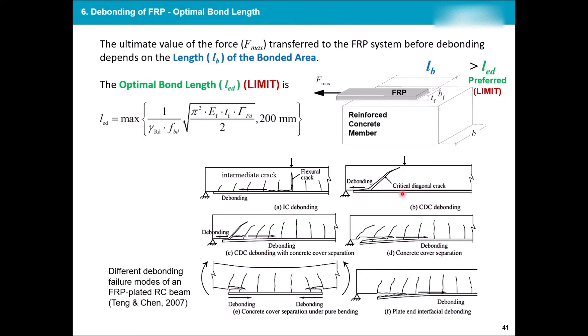This case, I will have the critical diagonal crack. Yes, so CDC with concrete cover separation as well. The concrete cover gives up. You see there's another crack here. Again, debonding happens. The concrete cover generally giving up. So this FRP is connected to the concrete cover. If the cover fails, then the main section doesn't have any FRP attached to it. So that's another problem.